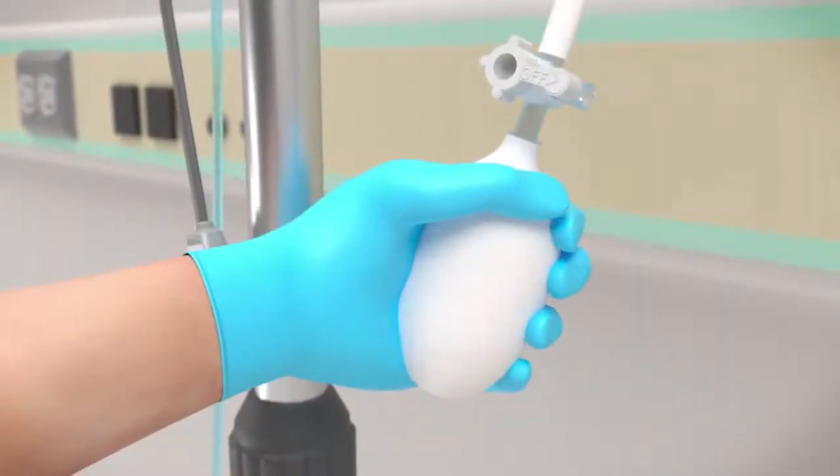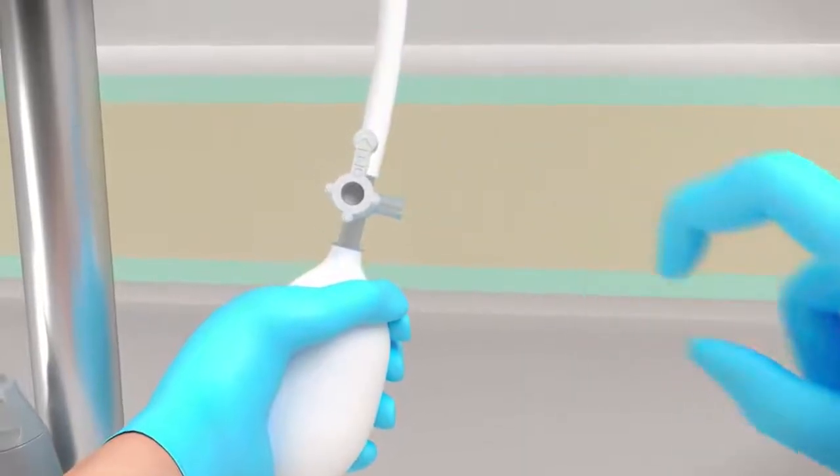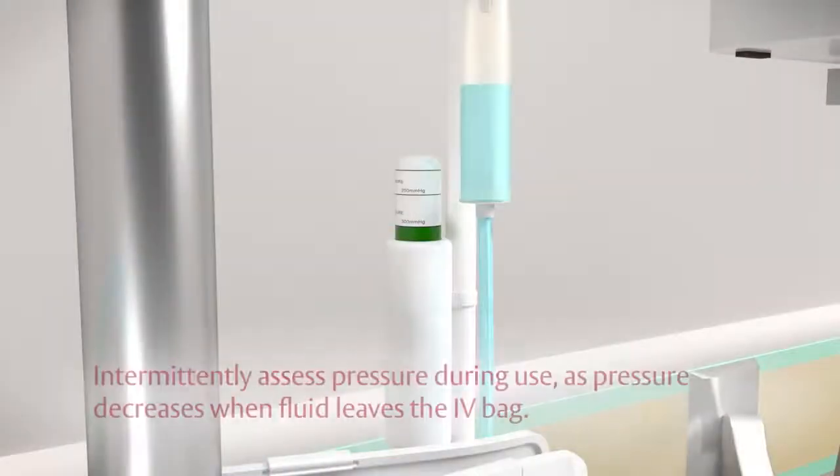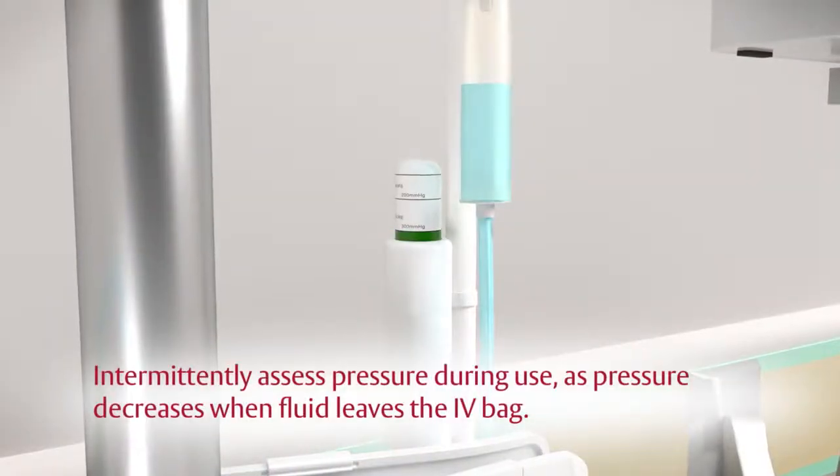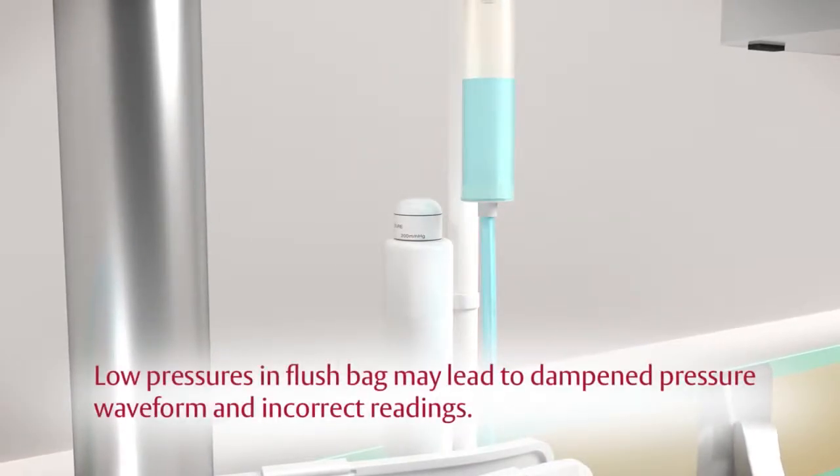Pressurize the IV flush solution bag to 300 millimeters of mercury. Turn stopcock toward the pressure bag to lock off air pressure. Intermittently assess pressure during use as pressure decreases when fluid leaves the IV bag. Low pressures in flush bag may lead to dampened pressure waveform and incorrect readings.